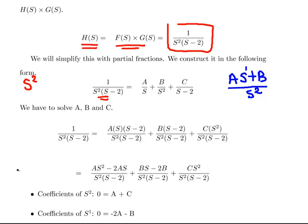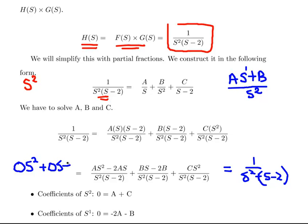This numerator is equal to 1, and the full fraction equals 1 over s squared times s minus 2. We are particularly interested in the numerator. We can write that as 0 s squared plus 0 s plus 1. So 0 s squared plus 0 s plus 1 equals a s squared minus 2a s plus b s minus 2b plus c s squared. Now we match up the coefficients. The coefficient of s squared on the left is 0, and on the right we have a plus c, so 0 equals a plus c.